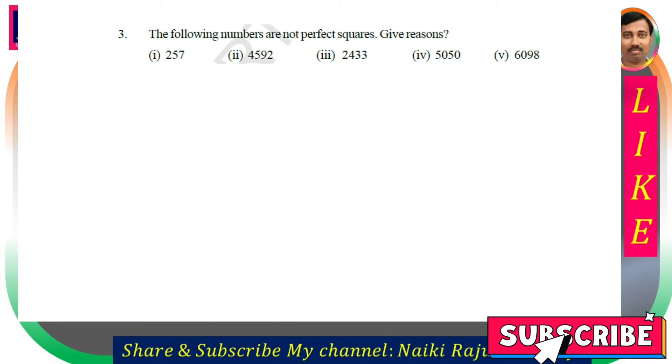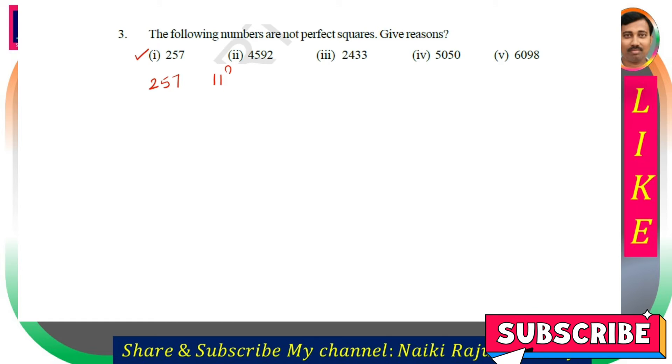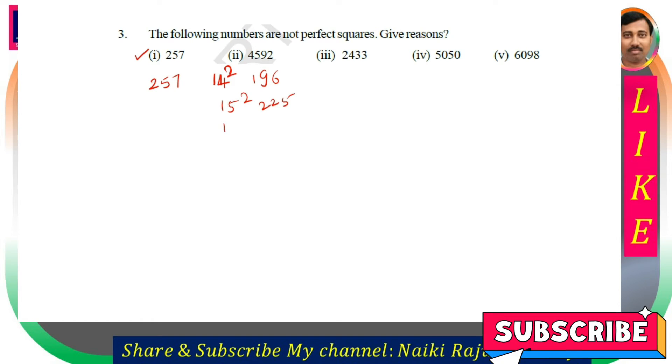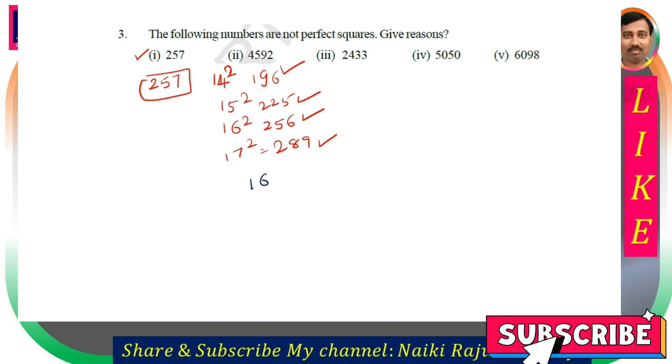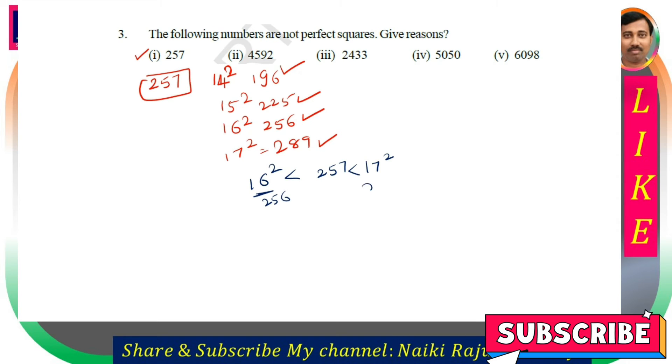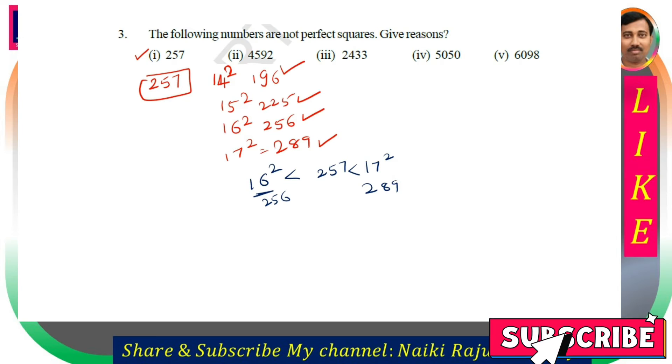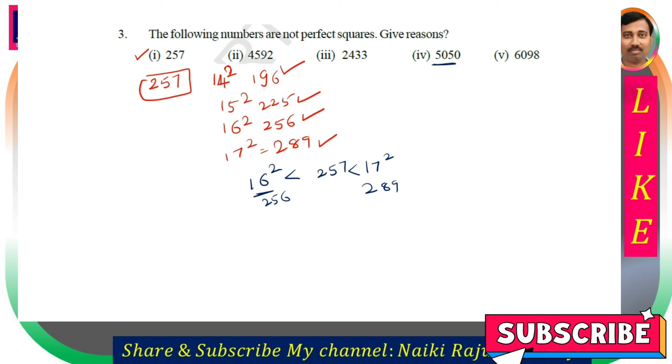Third question: The following numbers are not perfect squares. Give reasons. First question is 257. So 257 is not a perfect square. Observe: 14 square is 196, 15 square is 225, 16 square is 256, 17 square is 289. So 257 lies between 256 and 289, meaning 257 is not a perfect square because it cannot be expressed as two equal factors. Remaining questions also follow the same approach.